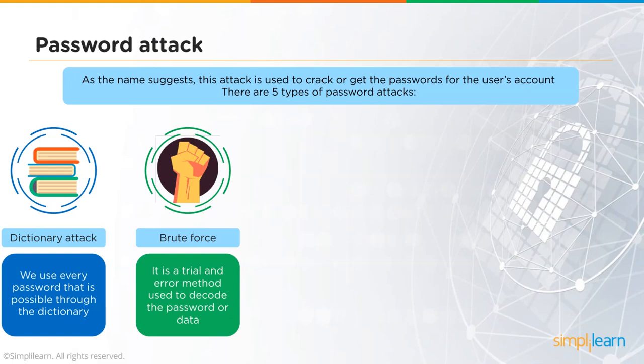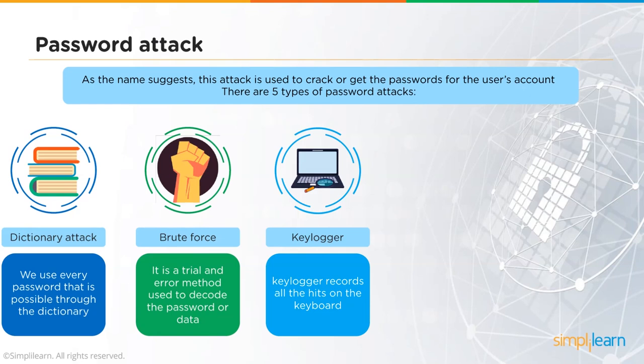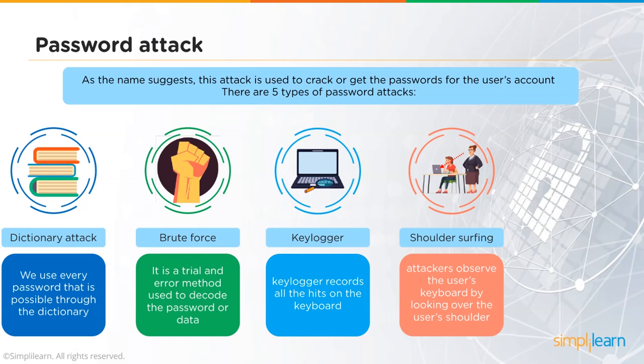A keylogger, as discussed, is software installed on a machine that grabs every keystroke and stores it in a file the hacker can later access — capturing passwords, credit card info, and anything typed. Shoulder surfing is a physical attack where the attacker is physically present when the user types their password and looks over their shoulder to observe it.